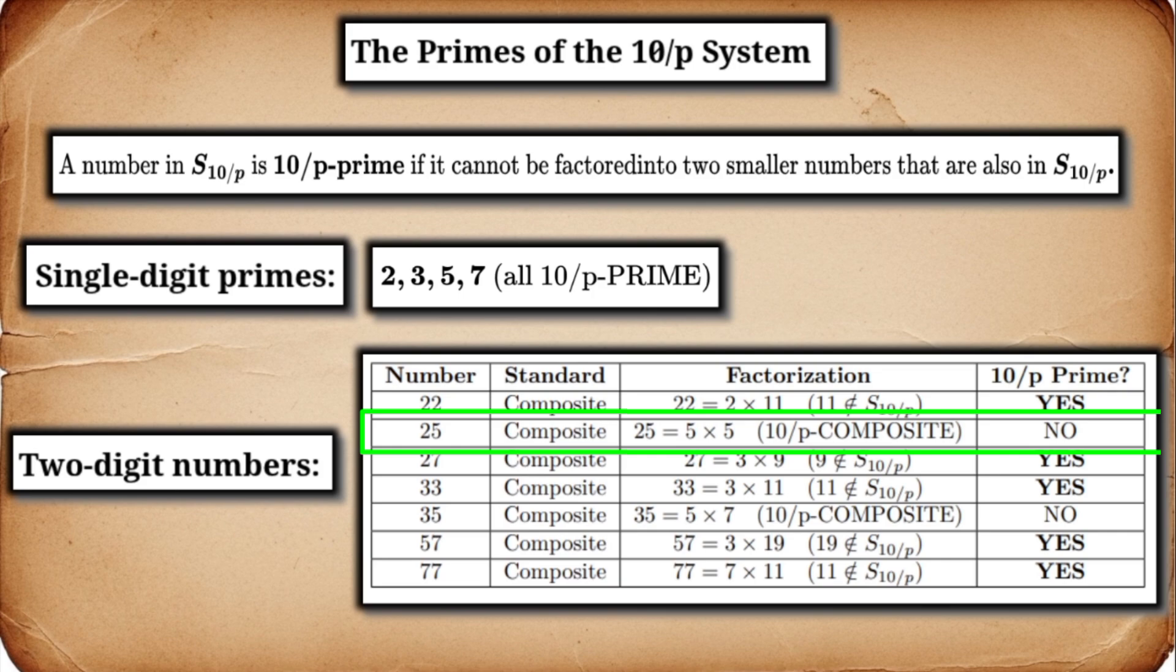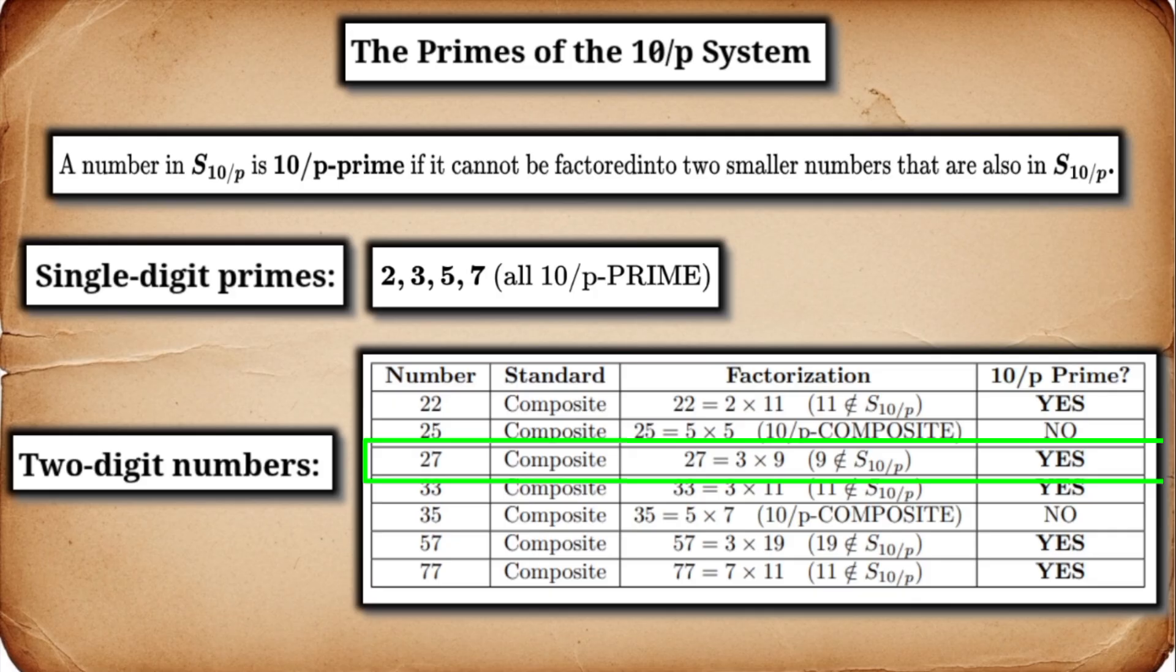25. Standard, 5 times 5. Are both 5s in S10 over P? Yes. Therefore, 25 is 10 over P composite. 27. Standard, 3 times 9. Is 9 in S10 over P? No. 27 equals 5 times 5.4? Not valid. There are no valid factors. Therefore, 27 is a 10 over P prime.